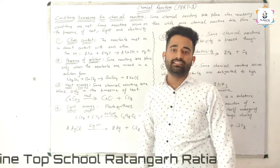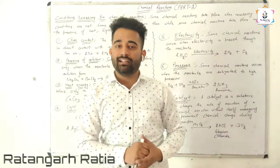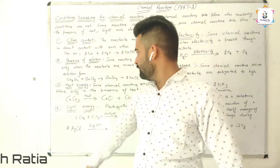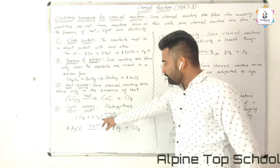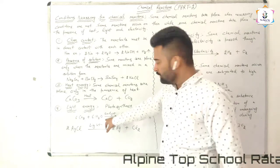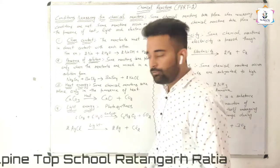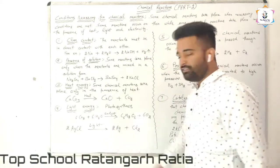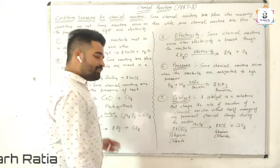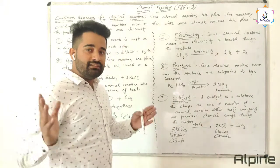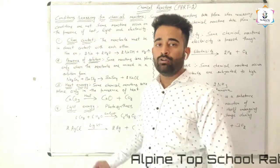The fourth condition is light energy. A very common example is photosynthesis — the process by which plants make their own food in the presence of sunlight. Carbon dioxide and water react in the presence of sunlight and chlorophyll to form glucose and oxygen. This means some reactions need light energy.